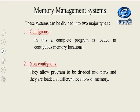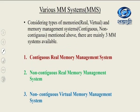Memory management systems are divided into two major types. First is contiguous — where a complete program is loaded in contiguous, that is continuous or adjacent, memory locations. The second type is non-contiguous — where the program is divided into parts and loaded at different locations in memory. Considering real and virtual memory, and contiguous and non-contiguous systems, there are mainly three memory management systems. First is contiguous real memory management, then non-contiguous real memory management, and third is non-contiguous virtual memory management. Virtual memory management cannot be of contiguous type — it is always non-contiguous.